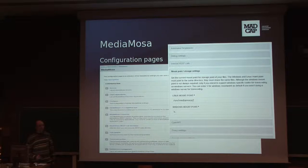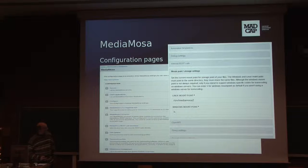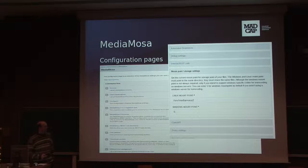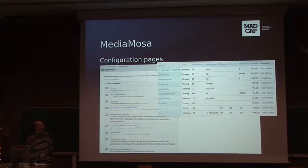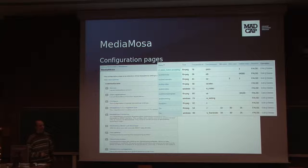You can configure your website settings — for example, you can set debug settings and mount points. You see a Windows mount point here, but that is for historical reasons — we don't support Windows, so I suggest Unix. You can configure your transcode parameters, and we have tool parameters for FFmpeg. If you are familiar with FFmpeg, you'll see a lot of parameters. You can define new ones — it filters your transcode parameters.